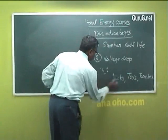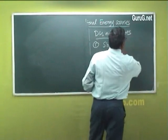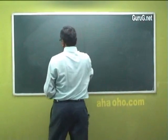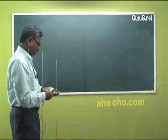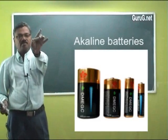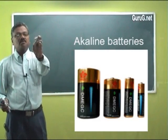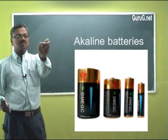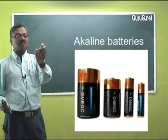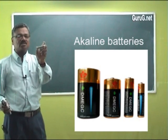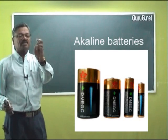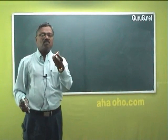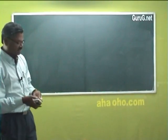Now let us go to the anode, cathode, and electrolyte present in alkaline batteries. This is an alkaline battery of 1.5V, now utilized in place of the dry type. It has a long shelf life. I will try to explain what is the anode, what is the cathode, and what are the electrolytes present in an alkaline battery.